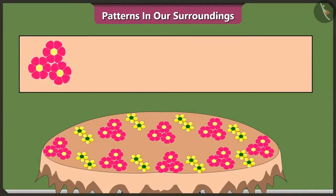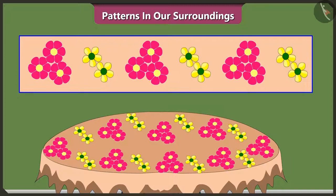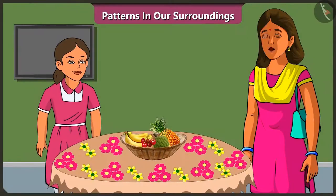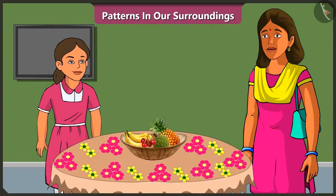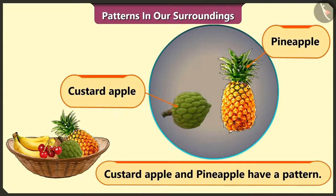It has three flowers, then two flowers, then again three flowers, two flowers, three flowers, two flowers — because it gets repeated, and that's how this pattern is created. Well done, Vinny. Very good. Now, can you tell which of the fruits on the table have a pattern? There is a pattern in custard apple and pineapple.